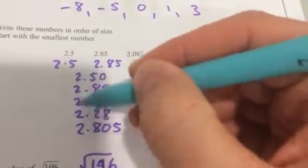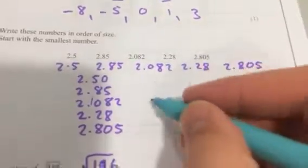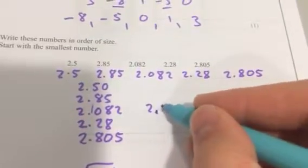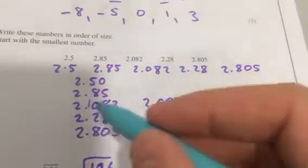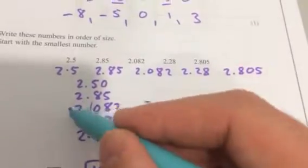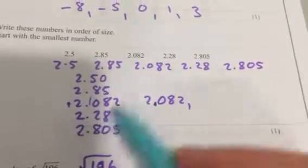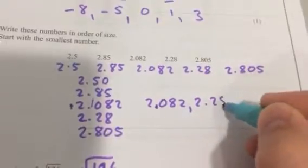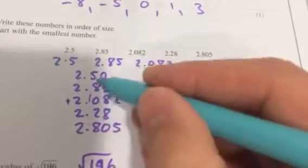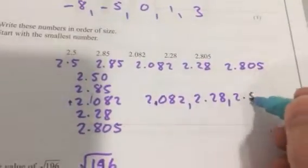Then we're going to look at, they've all got two in the units, but in the tenths, 2.082 is the smallest. That's that one. Then the next smallest would be 2.28, just comparing in the tenths column, then 2.5.